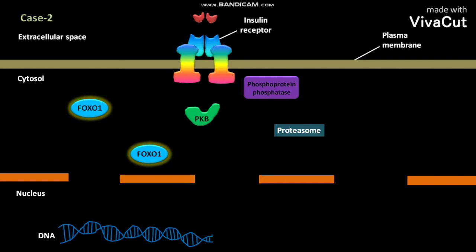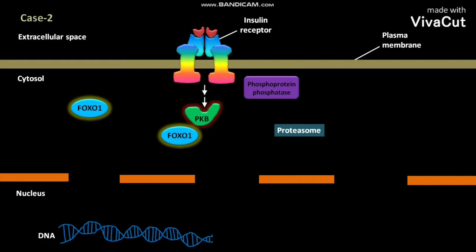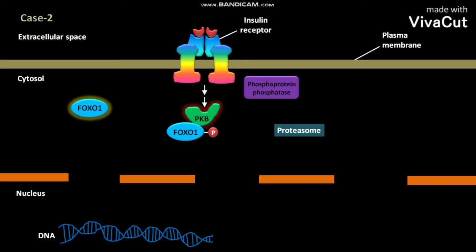In Case 2, when insulin binds to the insulin receptor present in the plasma membrane of a cell, a signaling cascade is activated. This signaling cascade leads to PKB activation. The cytosolic FOXO1 then binds to the activated PKB and gets phosphorylated. The phosphorylated FOXO1 then leaves the activated PKB.